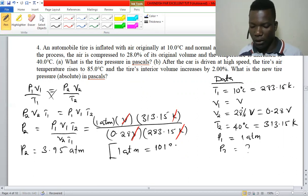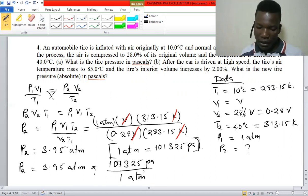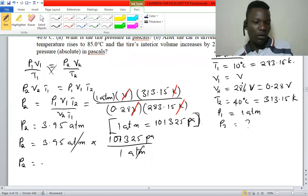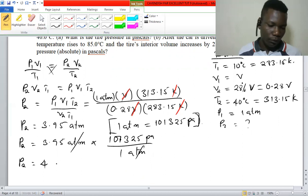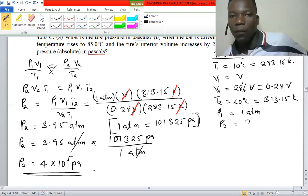This pressure in pascals is going to be calculated using conversion factors. Pressure two is 4 times 10 to the power 5 pascals. That is our pressure in pascals, and that's how the first part gets solved.